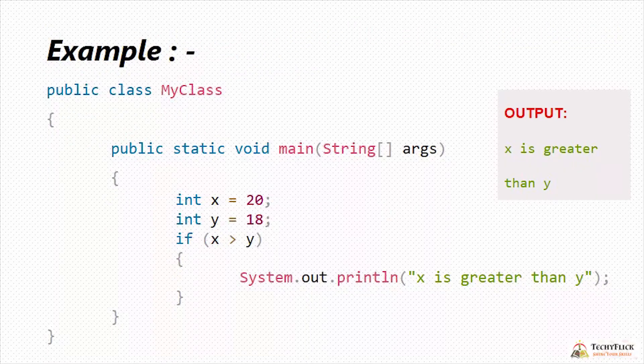In the next example, we use variables: x is equal to 20, y is equal to 18. We assign the variables and check if x is greater than y. Since x equals 20 and y equals 18, the condition is true and the output is 'x is greater than y'.